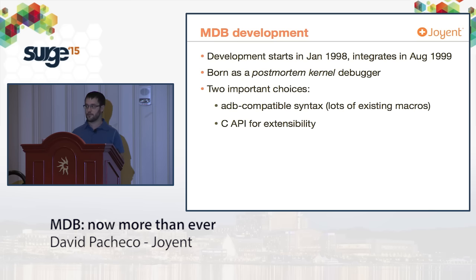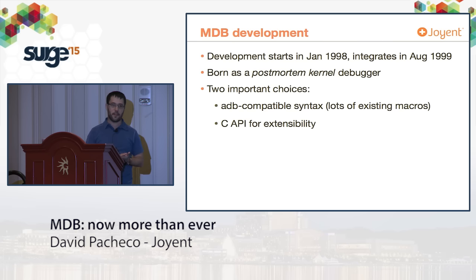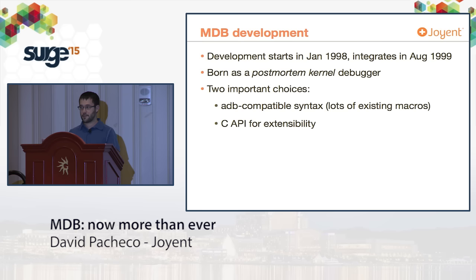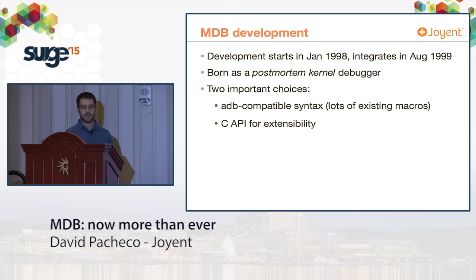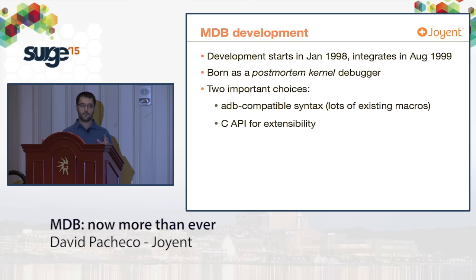So the tools were primitive, unreliable, or incomplete, and there was a catalyst for a new debugger: we needed 64-bit support, which wasn't present in these tools. It wasn't clear that the right path was to improve those tools as opposed to creating a new debugger. So in 1998, Mike Shapiro started work on MDB, which ultimately integrated in August of 1999 and shipped in Solaris 8. MDB was born as a postmortem kernel debugger. The adoption spread organically within Sun — engineers started using it, others saw them and started using it — and the ADB-compatible syntax really helped that spread.